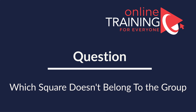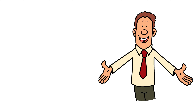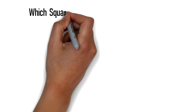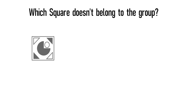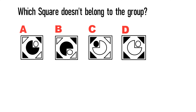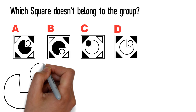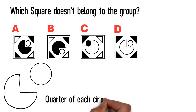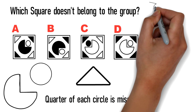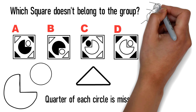I'm excited to share how to solve these types of problems on the test. Typically, you need to determine which object does not belong to the group. In this case, you need to determine which square doesn't belong. You're presented with four different squares — choices A, B, C, and D. Each square contains two circles inside. In the large circle, a quarter is missing and replaced with a small circle. All squares also have triangles in the corners. Give yourself 5 to 10 seconds to see if you can come up with the answer.